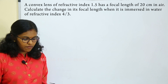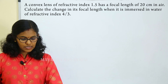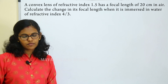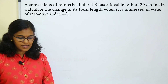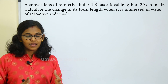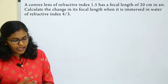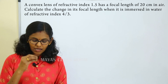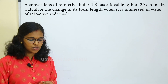Next question: a convex lens of refractive index 1.5 has a focal length of 20 cm. Calculate the change in its focal length when immersed in water of refractive index 4 by 3. The lens refractive index is 1.5 and focal length is 20 cm, and we need to find the change in focal length.